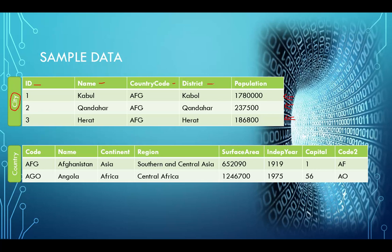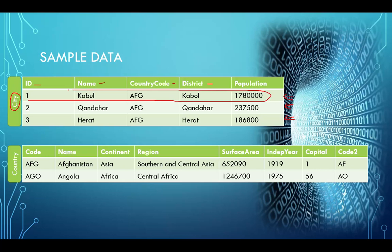We also have ID, name, country code, and district — we would refer to these as columns. Each column or field is going to hold information about a single attribute of that entity. Here's our entity — it has several attributes: the name, the country code, the district, the population — and each one is kept in its own column or field. In database applications you'll normally see it referred to as a column, and we get that name from this particular layout.